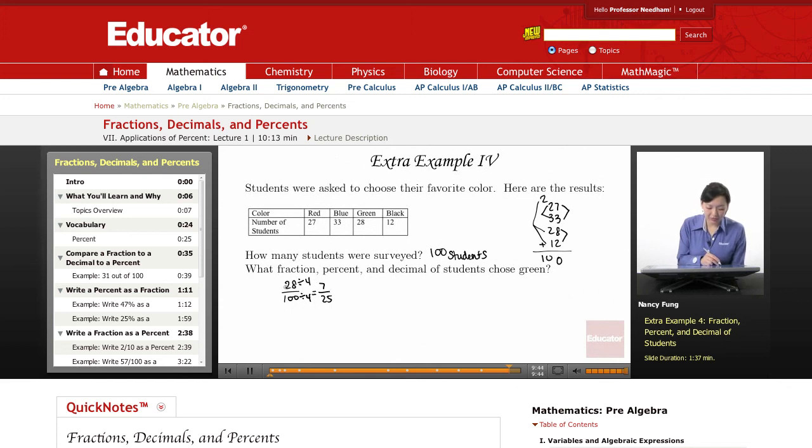As a percentage, I have 28, so I'm going to move the decimal to the left. So it's going to be 28%, and to change it into a decimal, I'm going to move the decimal to the left twice, and it's going to be 0.28.